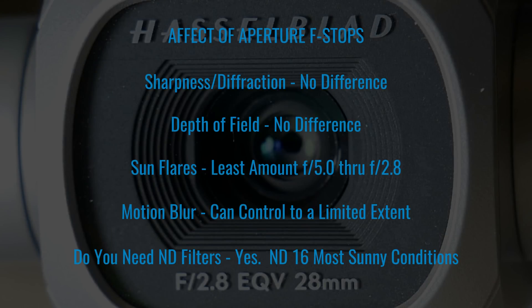Here's a quick summary based on all those tests. As far as diffraction affecting the sharpness of an image, I did not find any difference. Depth of field — same thing, no difference. Sun flares — the least amount was visible between F5.0 through F2.8. Motion blur — you can control that to a limited extent. And do you need ND filters when you have an aperture to adjust the amount of light? The answer is yes. An ND16 should be suitable for most sunny conditions.